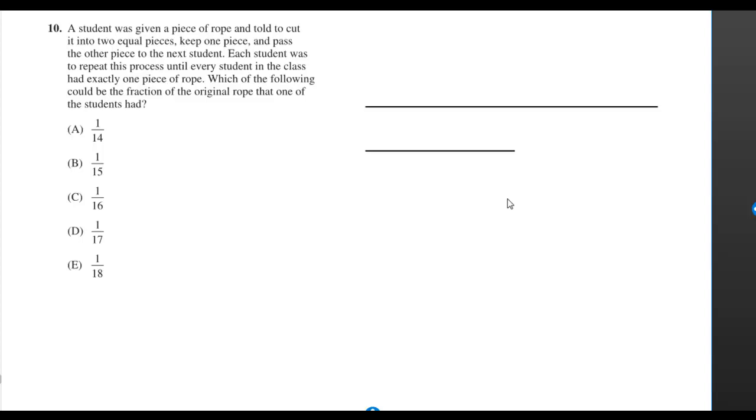A student was given a piece of rope and told to cut it into two equal pieces. Keep one piece and pass the other piece to the next student. Each student wants to repeat this process until every student in the class has exactly one piece of rope. Which of the following could be the fraction of the original rope that one of the students had?